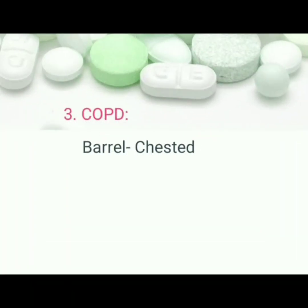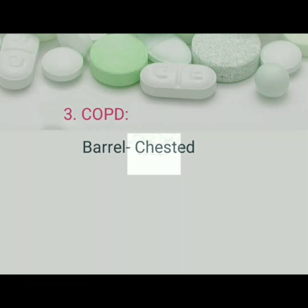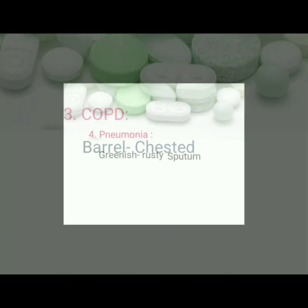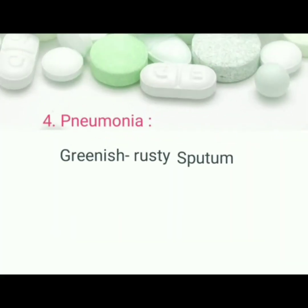COPD, chronic obstructive pulmonary disease: pathognomonic sign is barrel chest. Pneumonia: pathognomonic sign is greenish rusty sputum.